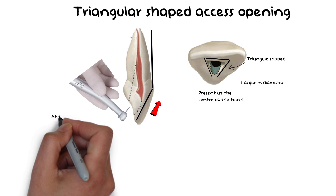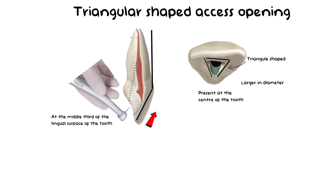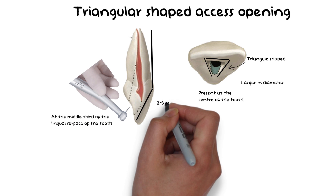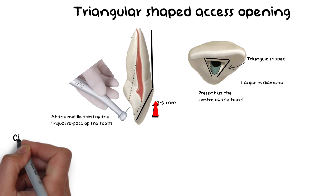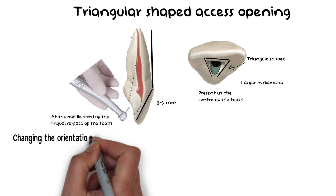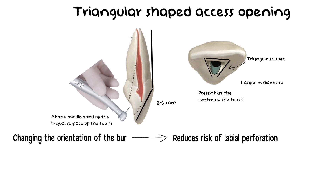This outline form is made in the middle third of the lingual surface of the tooth. After penetration to a depth of about two to three millimeters, the burr is reoriented to coincide with the long axis orientation of the root. This method of having a different orientation of the burr initially and then reorienting it later reduces the risk of lateral perforation through the facial surface, because if the orientation of the burr is not changed, the dentist may drill through the facial surface of the tooth.